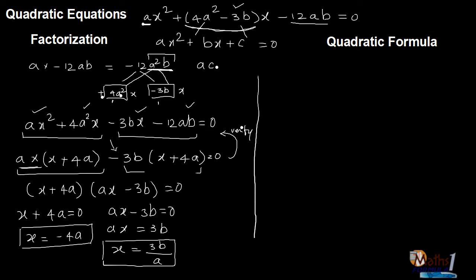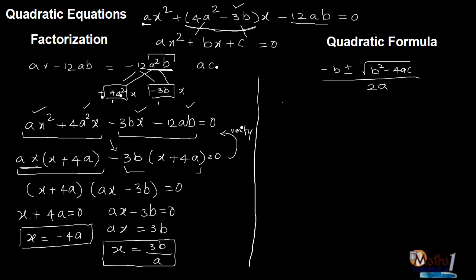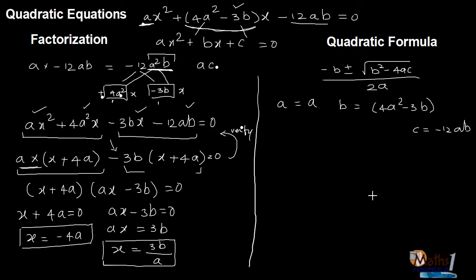Then the second method — let's go with that. You will see the effort required only by practice, not by memorizing. The quadratic formula says the root equals minus b plus or minus square root of b² − 4ac, divided by 2a. According to this, a equals a itself — the coefficient of the highest term x². b is 4a² − 3b — the coefficient of x — and c is minus 12ab.